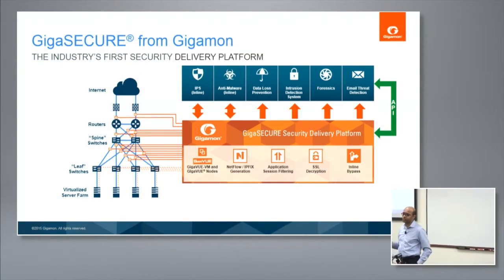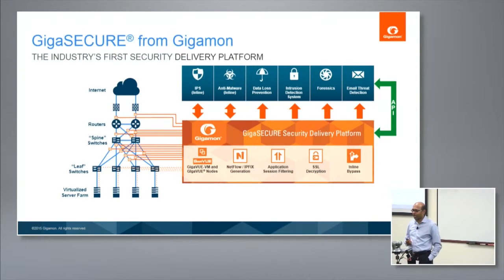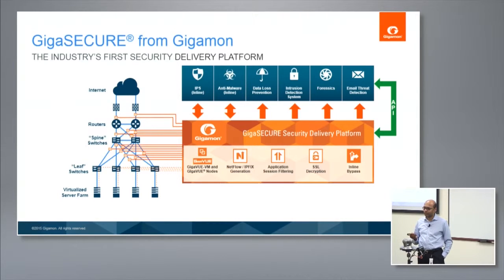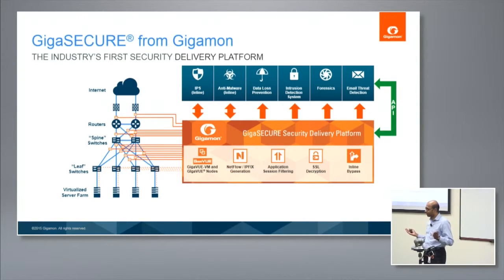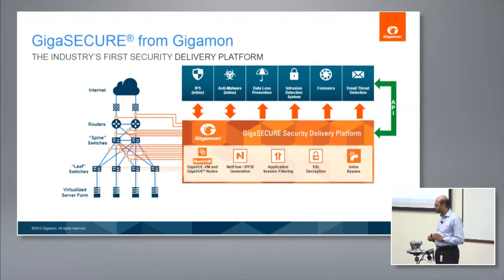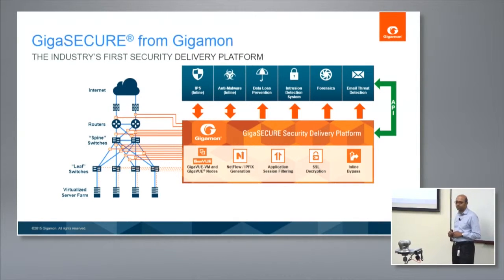One key thing: a common question is why not just do sampling — use sFlow, for example? There's a huge difference between using metadata generation for application performance management versus security. When using sampling for APM, looking at one in eight thousand packets may be good enough over time. When using it for security, that's horrible — you're missing 99.9% of it, and that's exactly where you could be missing key events. Big difference based on the use case.